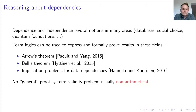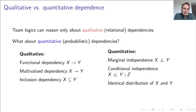These logics, as they have been developed over the years, have been designed to address only qualitative notions of dependencies. Often these notions originate or have parallels in relational database theory. For instance, functional dependency and inclusion dependency, which are crucial in database theory, are also the two core atoms in team logics.